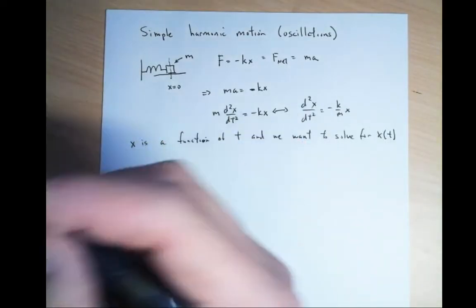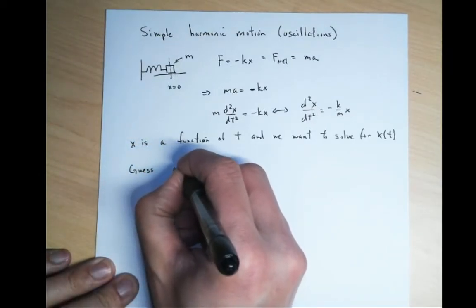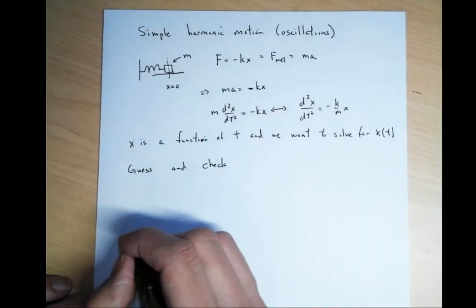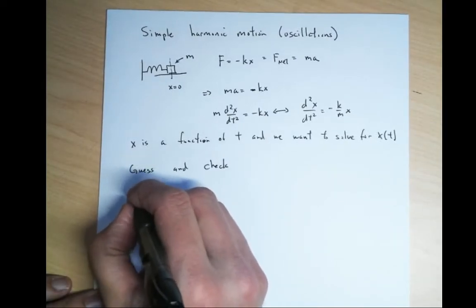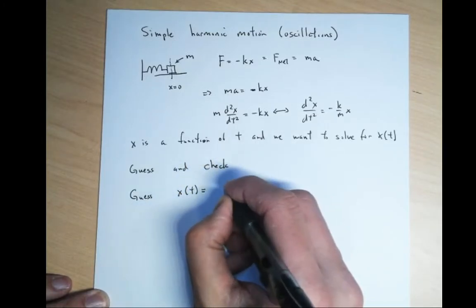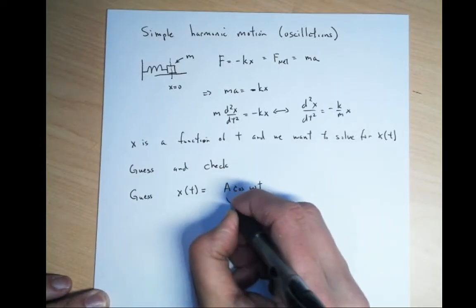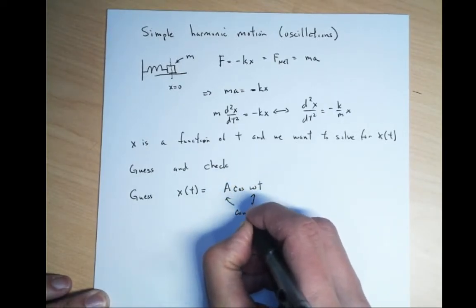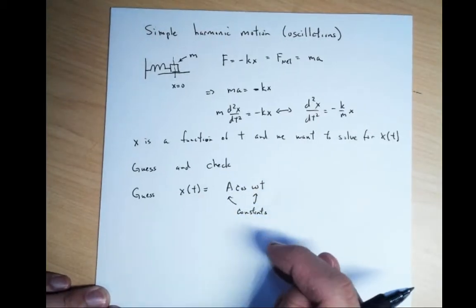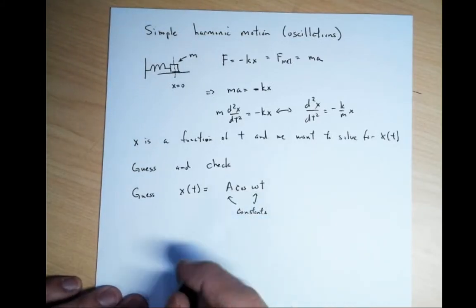In order to do so, we have to do the classic thing — we have to guess and check. We're going to guess x of t is equal to A cosine omega t. These are just two constants here, and I'm going to try to figure out what these constants have to be.